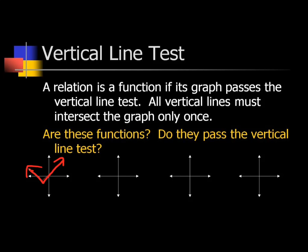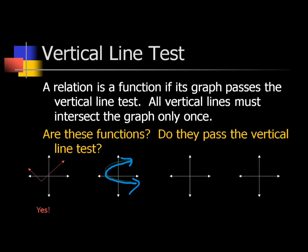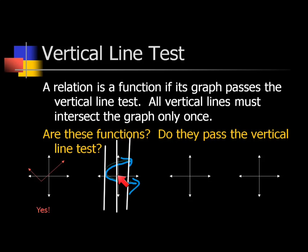Another way to think about it: does every x-coordinate have only one y-coordinate? Each x-coordinate only has one y-coordinate, so that's a function. Now for the next graph — if we draw a vertical line anywhere through this graph, does it only touch at one point? No, because it touches twice. That means it's not a function. For example, x is negative 1 has two y-values — maybe y is 4 and y is negative 2. Each x-value has more than one y-value, so it's not a function.